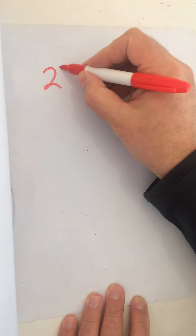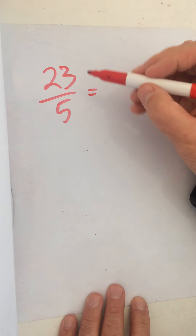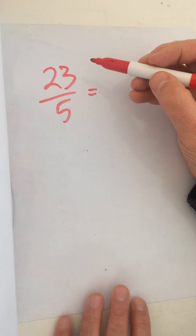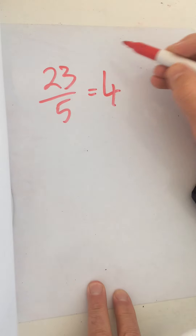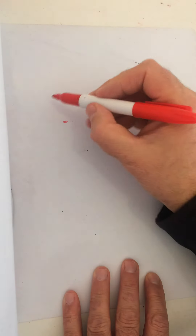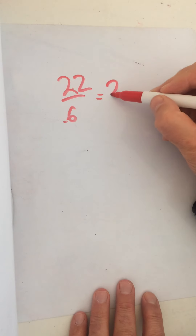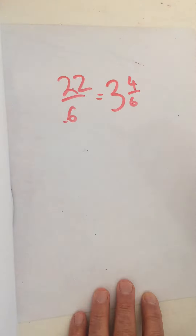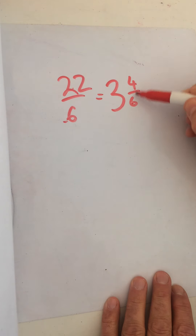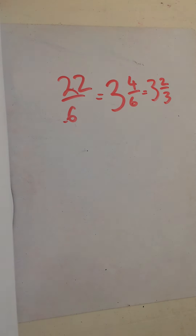Twenty-three over five is another improper fraction. How many fives are in 23? Five, ten, fifteen, twenty — that's four remainder three, so four and three fifths. For twenty-two over six, how many sixes in 22? Six, twelve, eighteen — three remainder four, so three and four sixths. Can we simplify that? Yes — it becomes three and two thirds. Always look to simplify your answers.